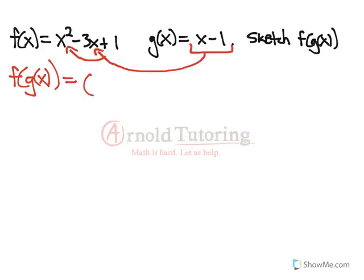So it becomes instead of x squared it's all of x minus 1 squared minus 3 times x minus 1 plus 1. So we're fitting the g of x function into f of x.